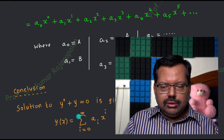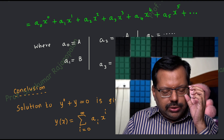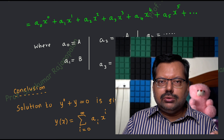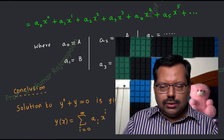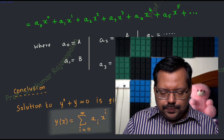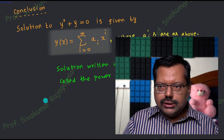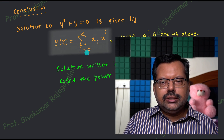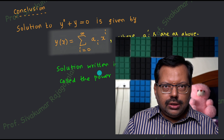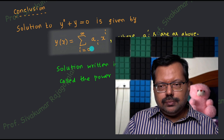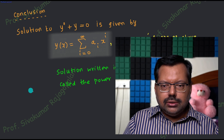Once you understand that, the entire green color expression can be written in compact notation using the sigma summation symbol. The solution to this familiar differential equation y'' + y = 0 can now be expressed as an infinite power series. This kind of solution — the solution appearing in the form of an infinite power series — is known as the power series solution to the differential equation. The constants must be maintained correctly.